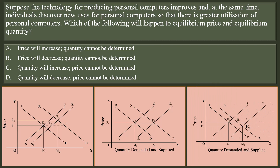Look at these graphs. With improvement in technology, supply increases. In all the cases, the supply curve S shifts to the right — the new supply curve is S1. With discovery of new uses for the personal computers, the demand for the computers increases. The demand curve shifts to the right in all three cases; the new demand curve is D1. But the extent of increase in demand and increase in supply differ in all three graphs.